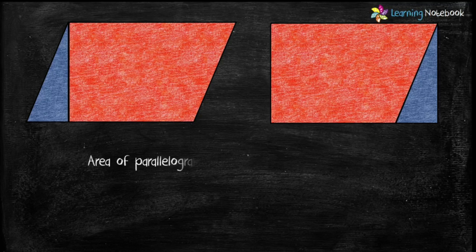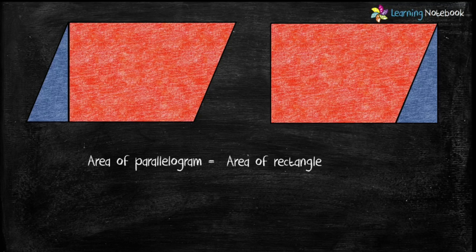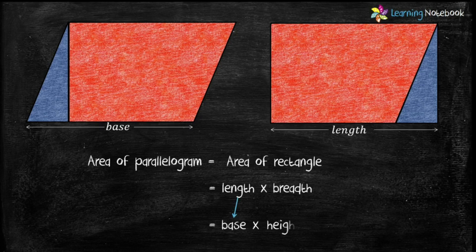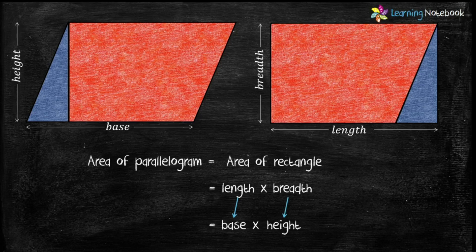So, area of parallelogram equals to area of rectangle. And we know area of rectangle is length into breadth. Now, in case of parallelogram, length is the base of parallelogram and breadth is the height of parallelogram. So students, in this way, we have found that area of parallelogram equals to base into height.